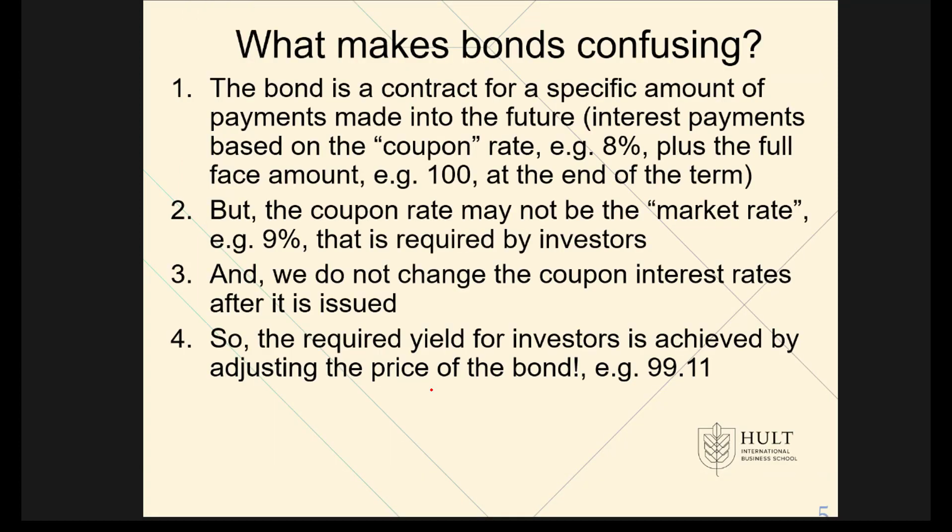Many students find bonds confusing, and here's my explanation of why. First, a bond is a contract for a specific amount of payments made into the future — interest payments based on a coupon rate plus the full face amount at the end of the term. That doesn't sound too bad: you get a regular interest payment and a big check at the very end. However, the bond pays based on the coupon rate, but that's not necessarily what somebody will pay for it.